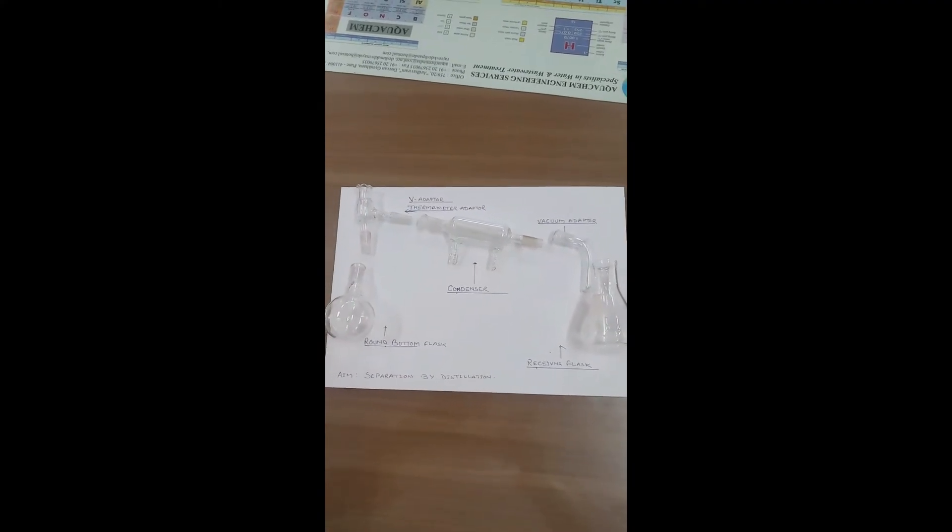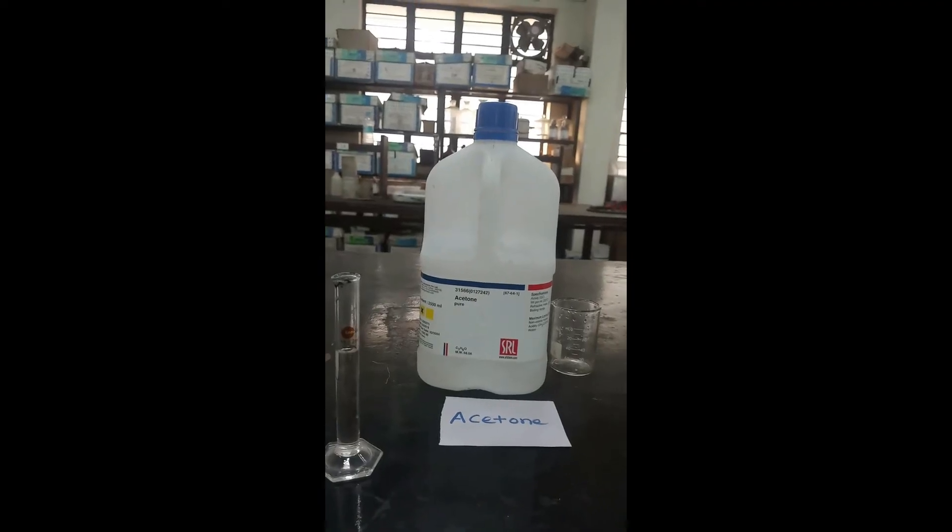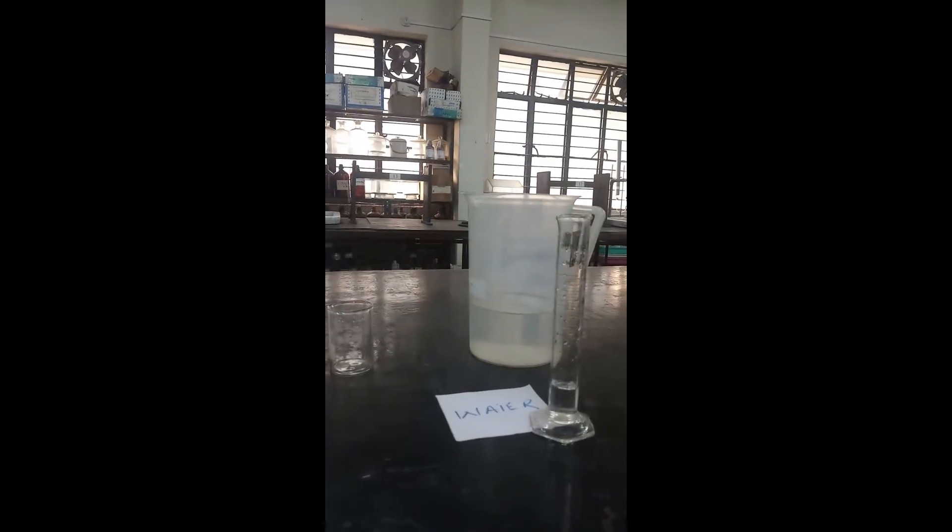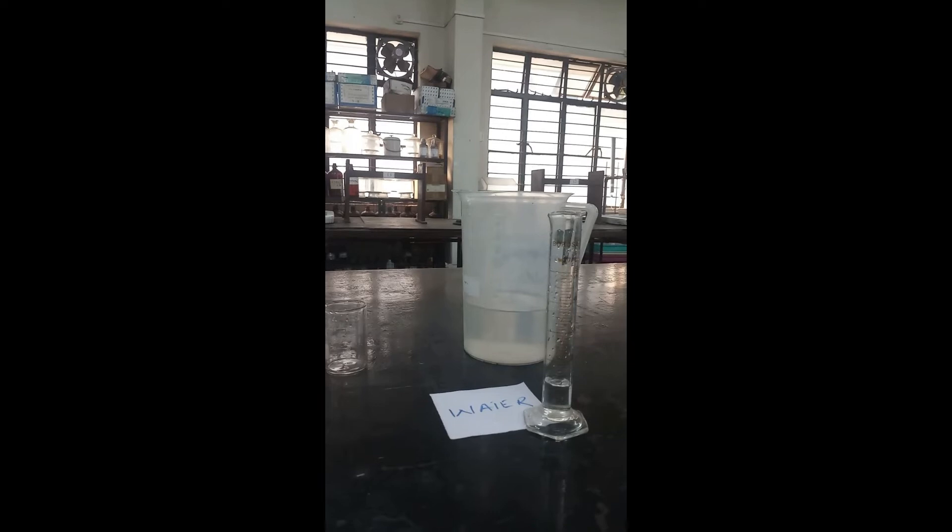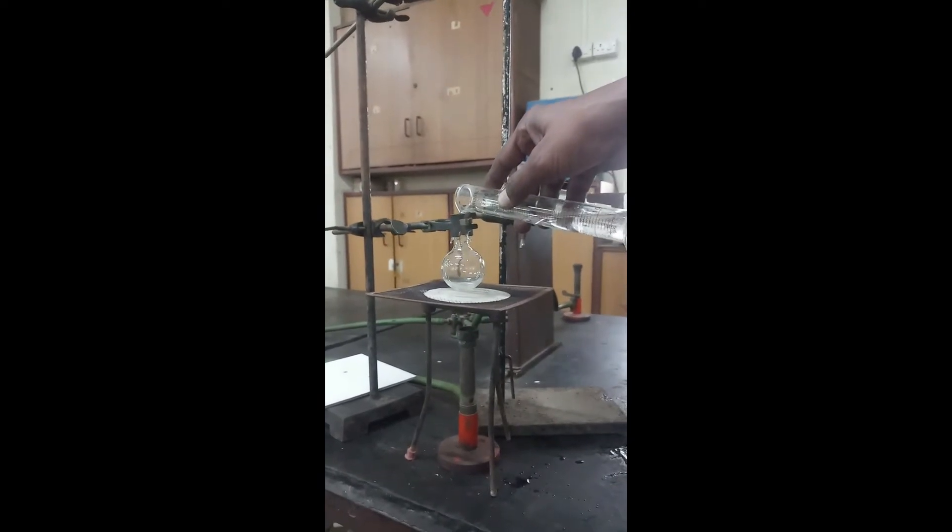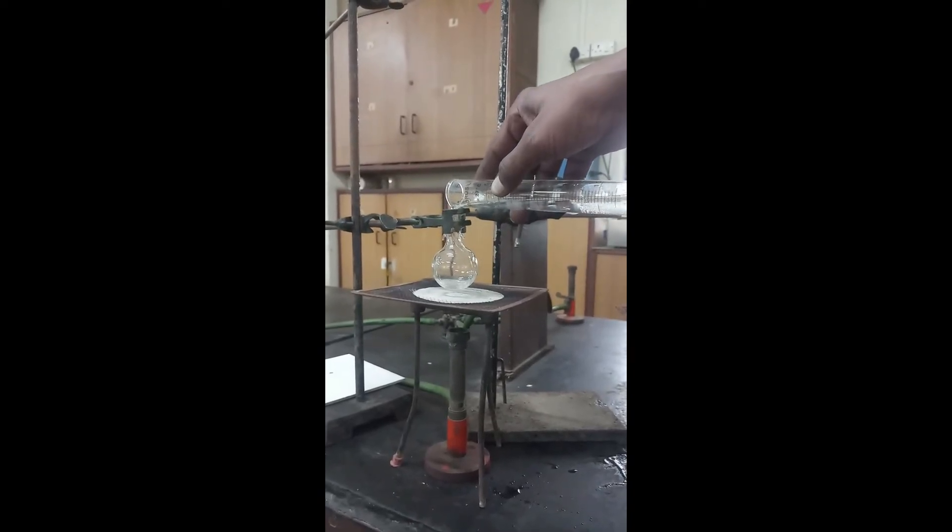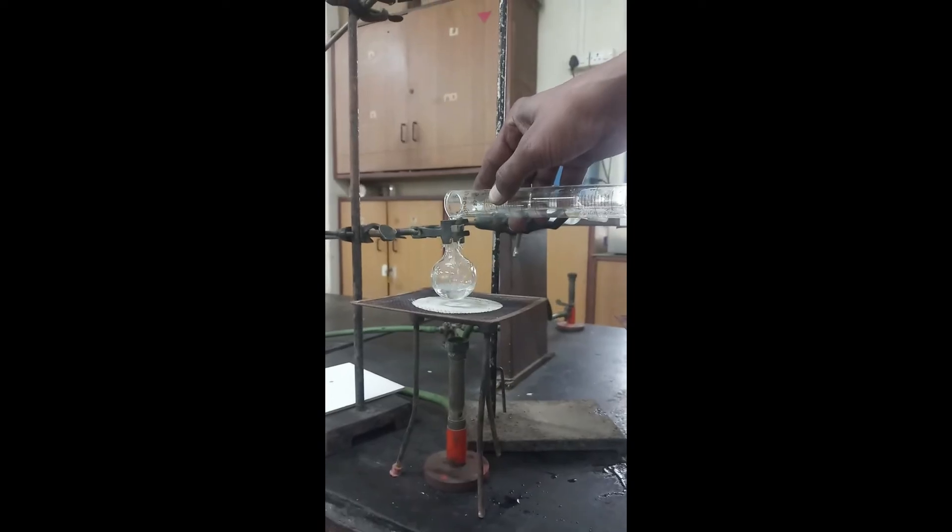This is the entire distillation unit. A mixture of acetone and distilled water will be given for separation. Pour 10 ml of the mixture of acetone and water in the round bottom flask clamped to the stand.